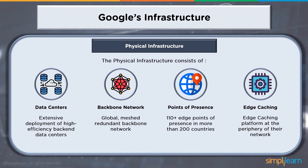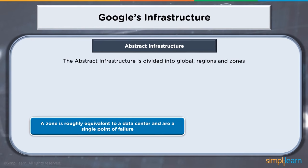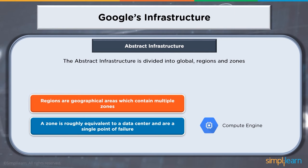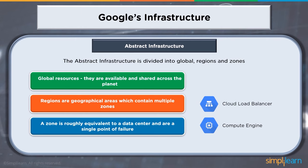The abstract infrastructure is divided into global regions and zones. A zone is roughly equivalent to a data center and a single point of failure — for example, Compute Engine is a zonal resource. Regions are geographical areas containing multiple zones, such as US Central or Europe Central, Europe West, and so on. Within a region, you have one or multiple zones providing high availability. You also have global resources shared across the planet, such as networks and IP addresses.